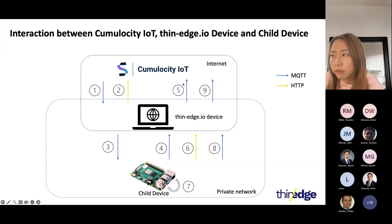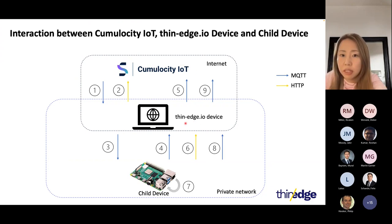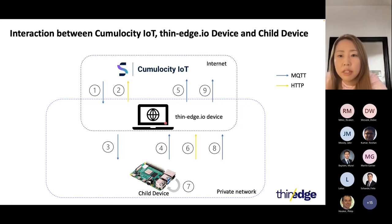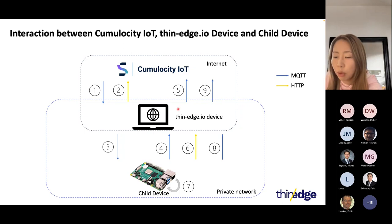Let's think about the flow and each component in the firmware update. We need three components: Cumulocity as an IoT platform, the thin-edge device as the main device, and child devices. In this diagram there is only one child device, but child devices can always be more than one. Cumulocity and the thin-edge device are connected over the internet, while the thin-edge device and the child devices are connected in the private network. The key point is there is no direct connection between Cumulocity and child devices — the thin-edge device works as a proxy between cloud and the child devices.